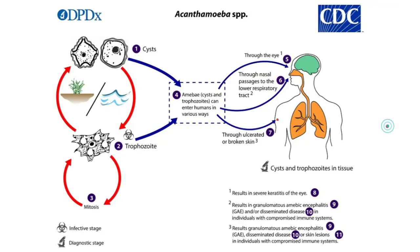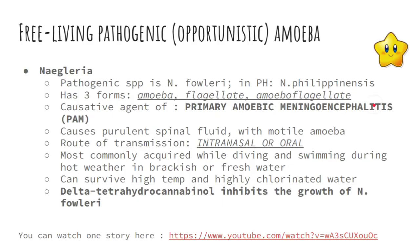For the life cycle of Acanthamoeba, it has cyst and trophozoite forms. You can acquire Acanthamoeba through the eye — especially with contact lenses — through nasal passages into the lower respiratory tract, or through broken or ulcerated skin.